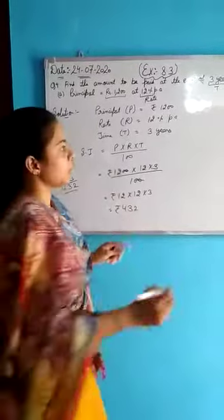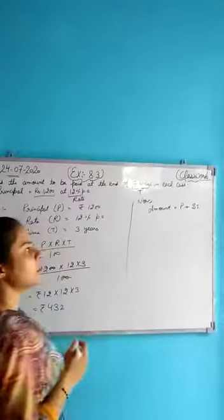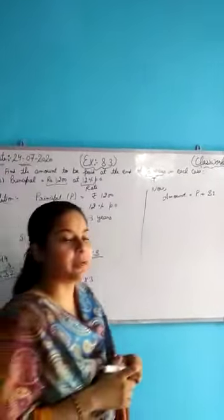So this one is the simple interest. So now, to find amount, the formula for amount is: amount equals principal plus simple interest.